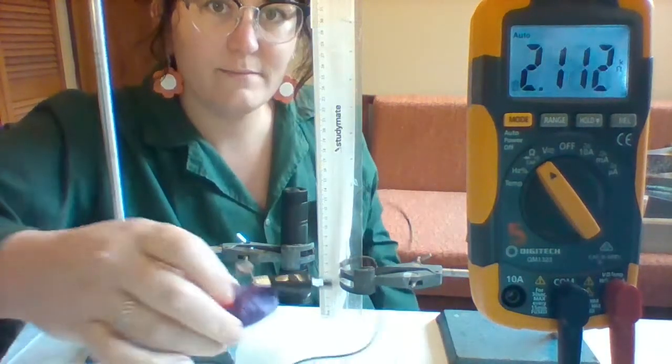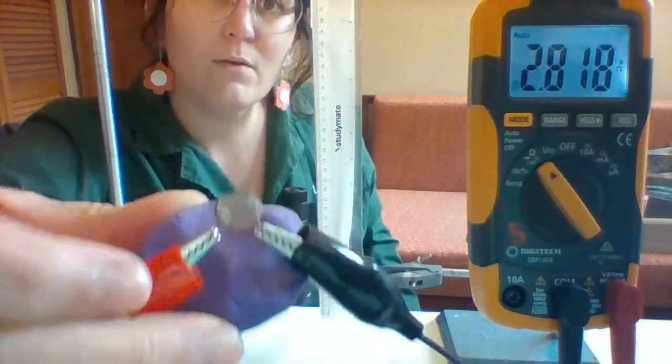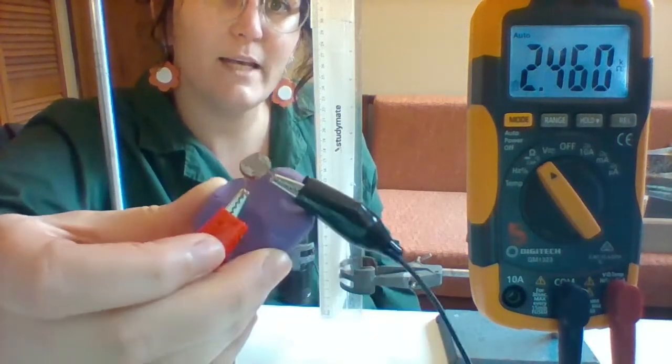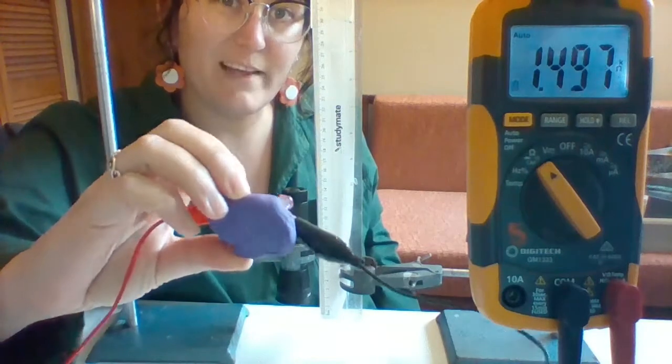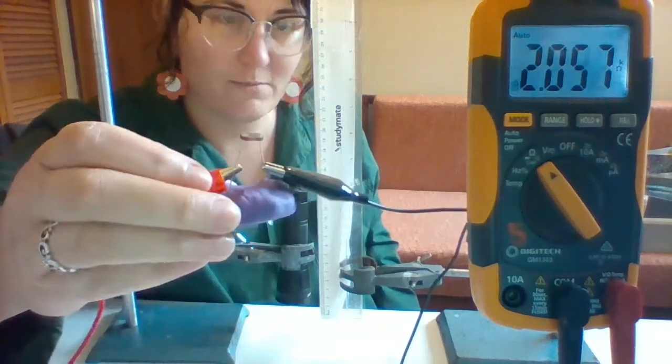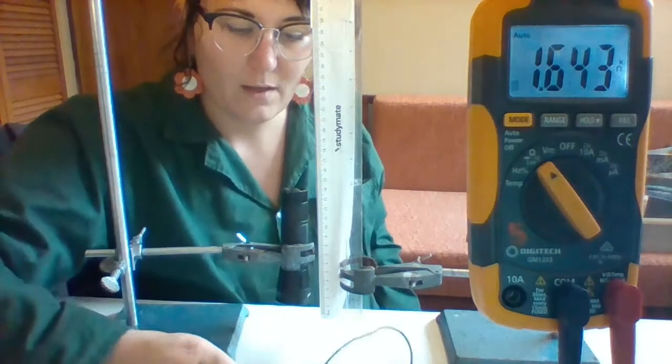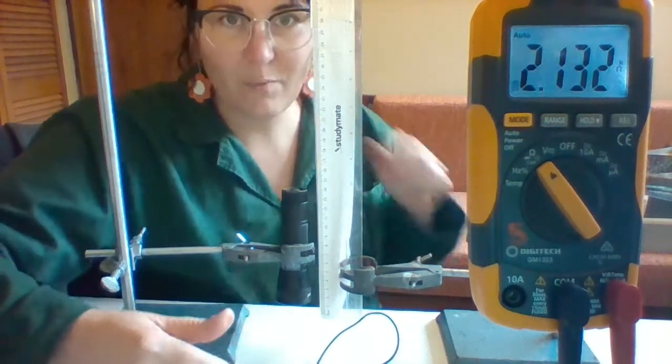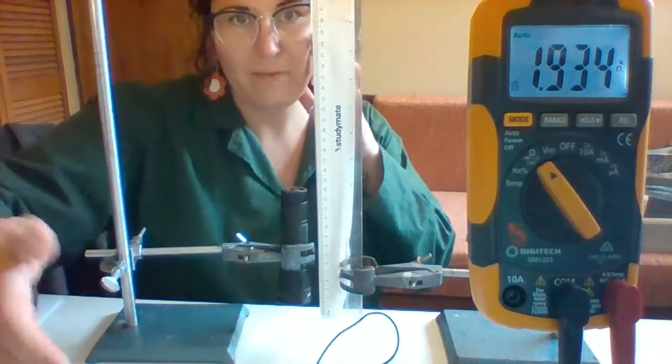They look like this, really tiny. This is just a bit of plasticine that I've got it sitting in just so it stays still. So these are a type of resistor that is dependent on the amount of light shining on it.